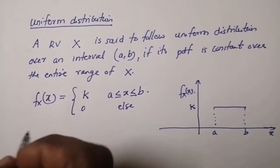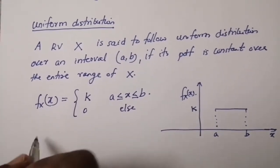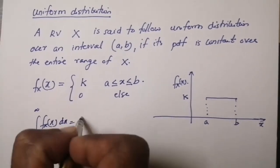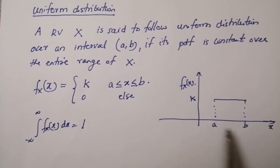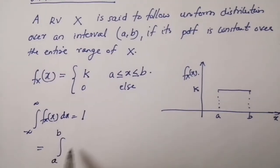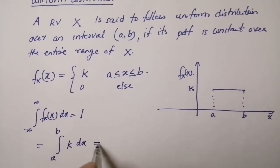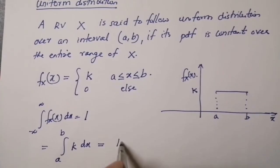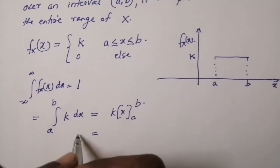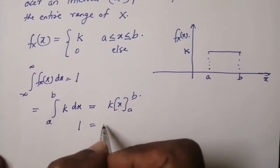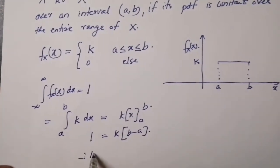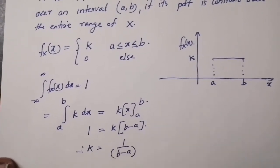The value of k can be found because we know that the total area under the curve from minus infinity to plus infinity of f_X(x) dx equals 1. Since the PDF is valid only in the range a to b, this becomes the integral from a to b of k dx, which equals k·x evaluated from a to b, giving us k·(b − a) = 1.